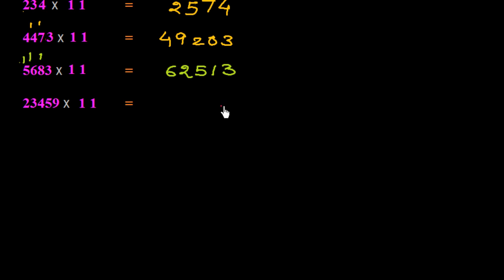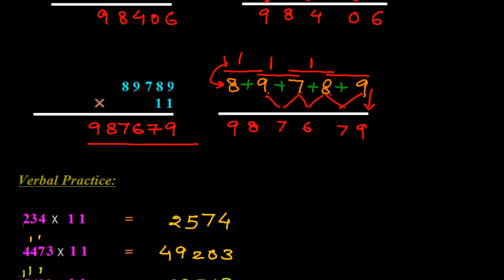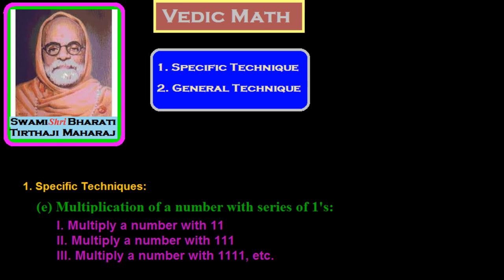For the last example, we write down 7, then 5 plus 9 is 14, put 4 and carry 1. Then 4 plus 5 is 9, plus 1 is 10, put 0 and carry 1. Then 3 plus 4 is 7, plus 1 is 8. Then 2 plus 3 is 5, and write the last digit as it is. The answer is 258049. This is a very short technique for multiplying 11 with any number — two-digit, three-digit, five-digit, and so on. Thank you.